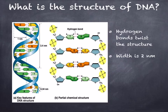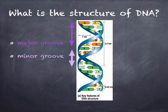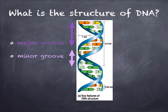These hydrogen bonds between the strands twist the structure into a helical shape called a double helix. The width of DNA is two nanometers. The DNA helix has two external grooves — a major groove and a minor groove. The major groove is wide and deep, and the minor groove is shallow and narrow. For each turn of the helix, there are 10 base pairs, and the distance between the 10 base pairs is 3.4 nanometers.